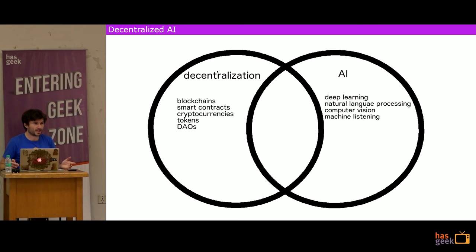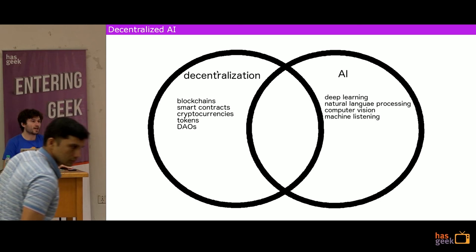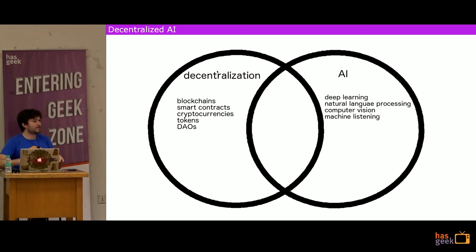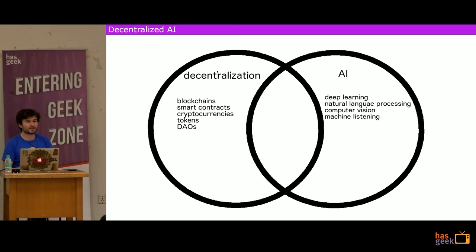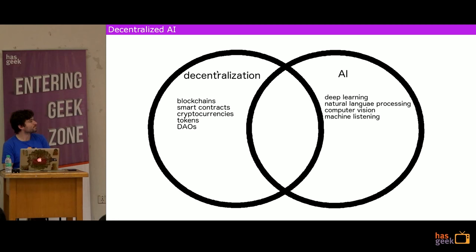In some sense this is two topics in one, and I'm going to explore their intersection towards the end. I'll mostly start out talking about machine learning and then talk about what happens when you add this notion of decentralization to it. By decentralization, I mean technologies like blockchains, cryptocurrencies, tokens, and DAOs — all the stuff you see these days trying to disrupt various industries. And on the other side, you have machine learning, AI, deep learning, and applications through natural language processing and computer vision.